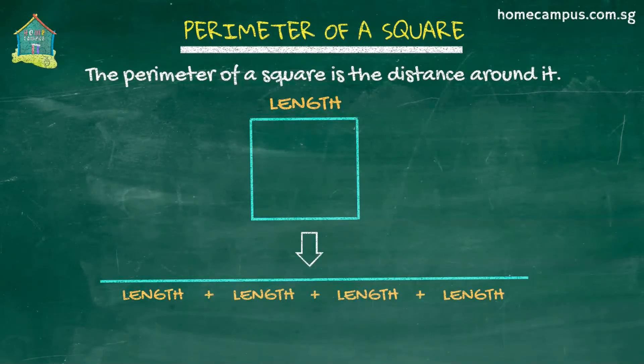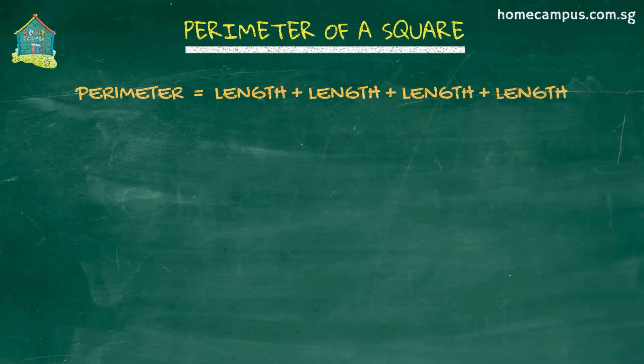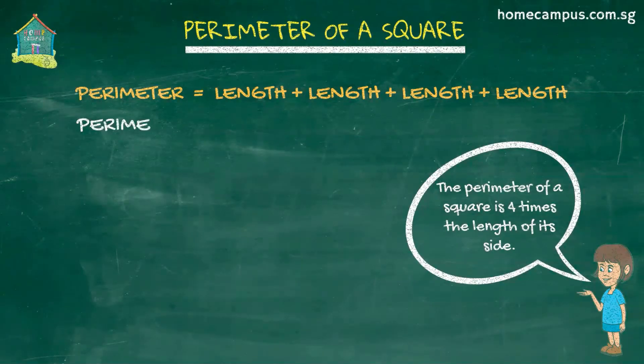The perimeter of this square would be its length plus length plus length plus length. Or if we simplify this equation, then we see that the perimeter of a square is four times the length of its side. So that's the formula to calculate the perimeter of a square.